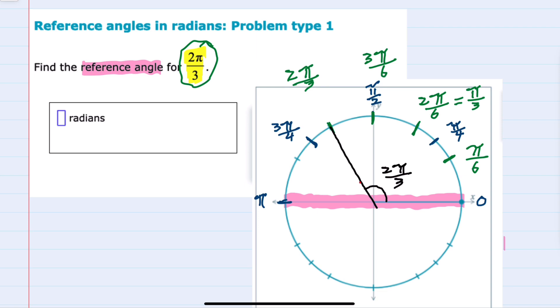So for this angle, the reference angle would be here, and to find that measure, which I can call theta, I know that adding theta and our 2π/3, adding those two angles, would take me halfway around, or all the way around to π.